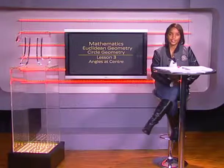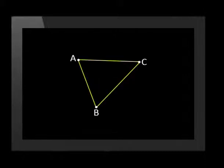Hello Grade 11s and welcome. Today we introduce the word 'subtends' and the theorem dealing with the angle at the center of the circle. From now we will be using the word 'subtends' frequently. It means 'opposite to'. For example, if the points A and B subtend at angle C, then angle ACB is opposite to the line AB.